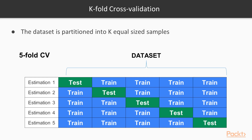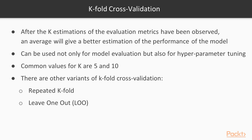Another variant is leave-one-out cross-validation, where we train on the whole dataset except for one point, use that one point for evaluation, and repeat this process for every data point. However, if you have millions of points, this will be computationally very expensive. Usually, k-fold or repeated k-fold cross-validation will give you really good results. Now that we know the idea behind k-fold cross-validation, let's see how to implement this in scikit-learn by going to our Jupyter Notebook.